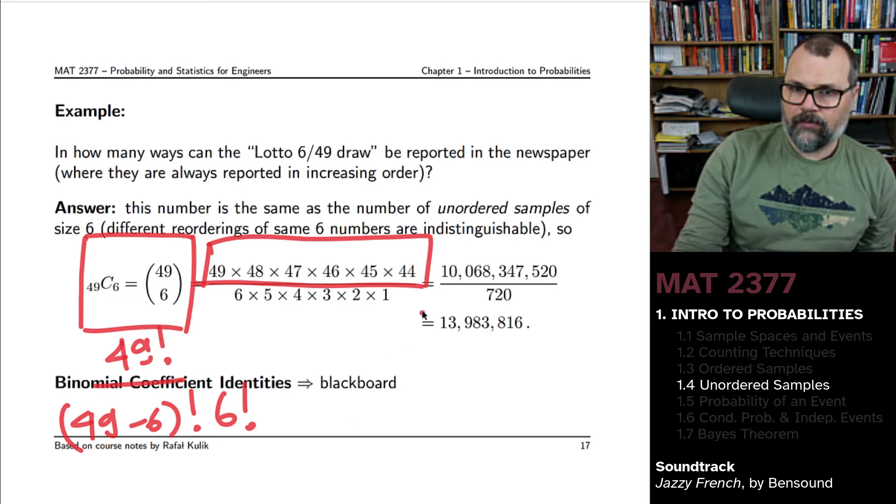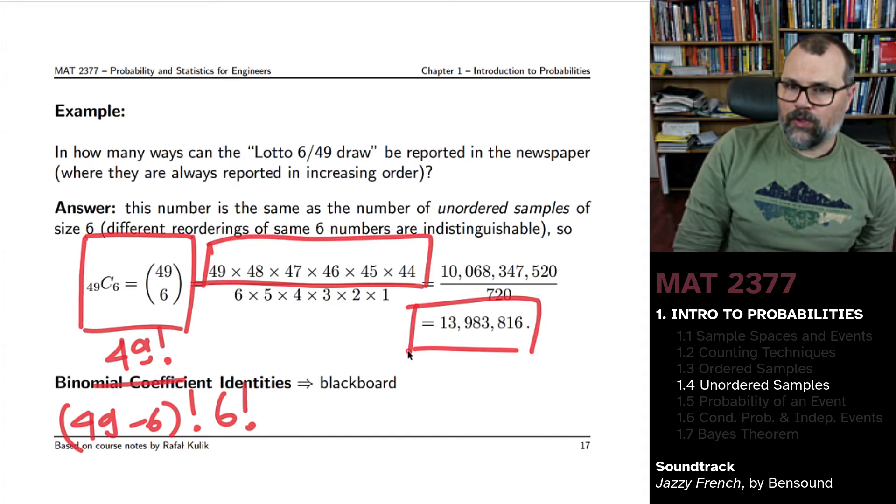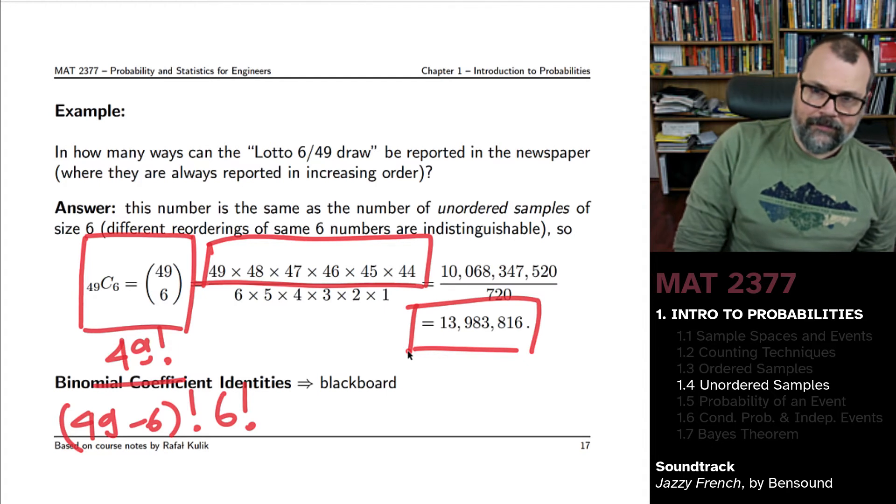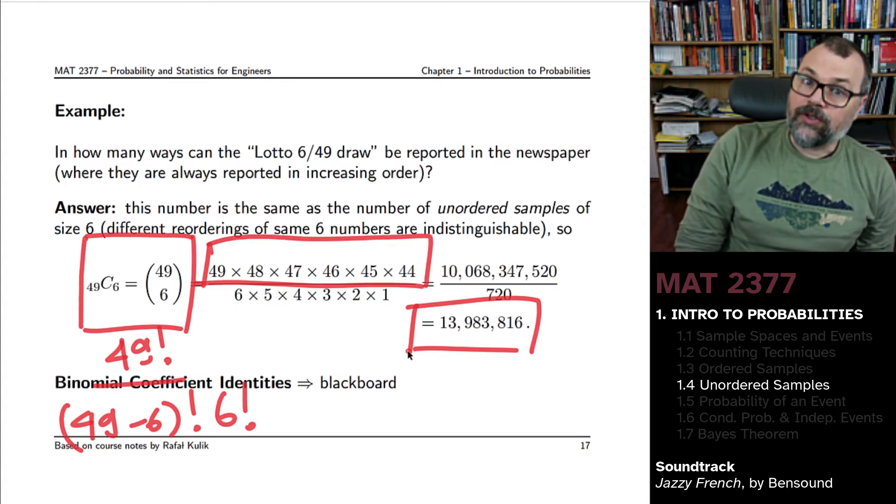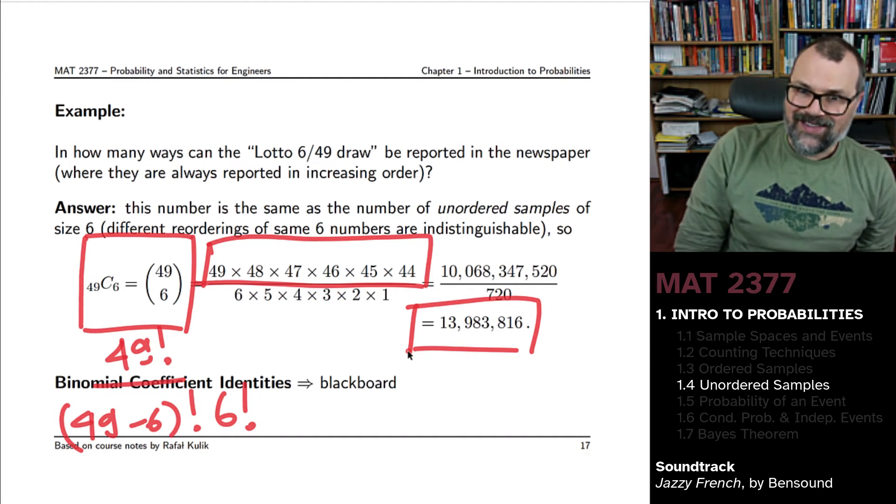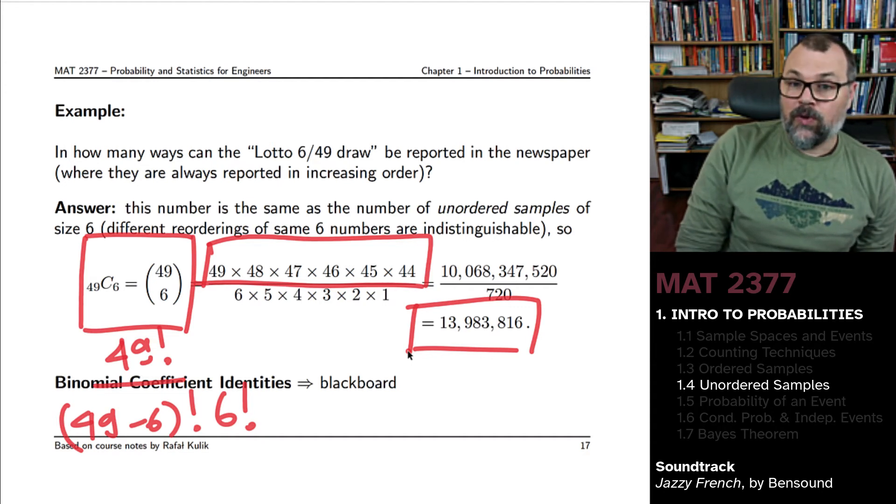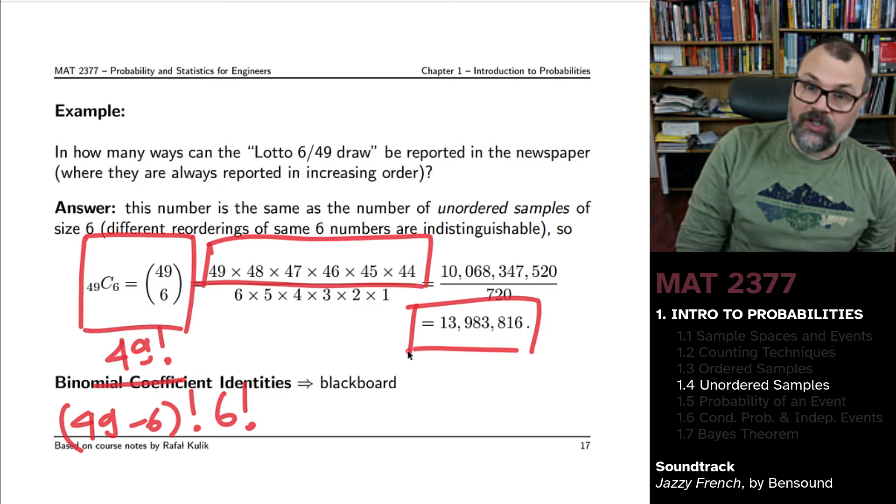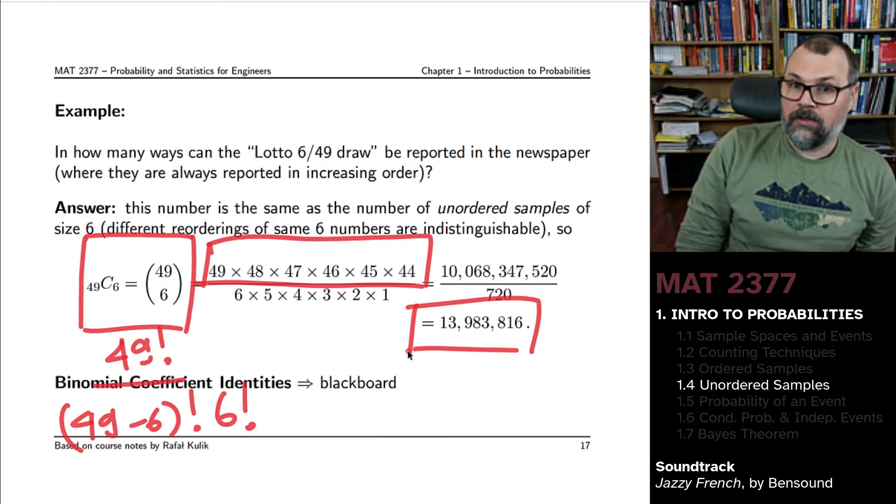And you'll get a total number of about 14 million possibilities. So what this is saying is that whenever you purchase a Lotto 6/49 ticket, when you pick six numbers at random, you have roughly speaking one chance out of 14 million to have picked the right six digits.